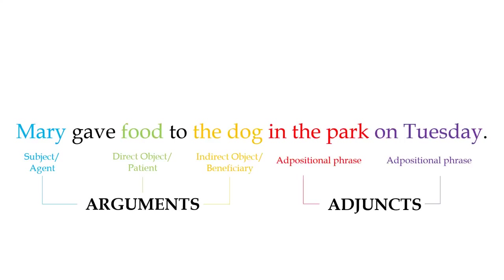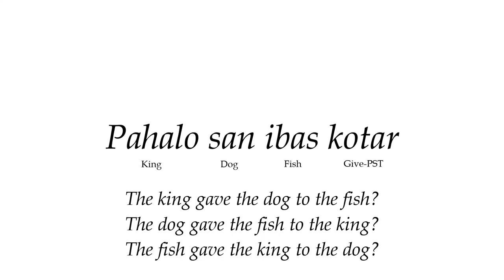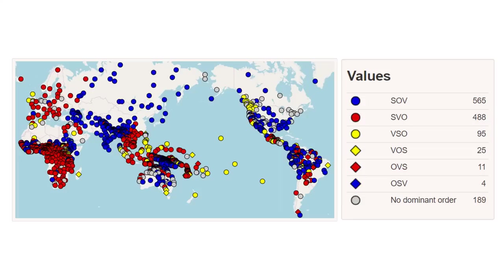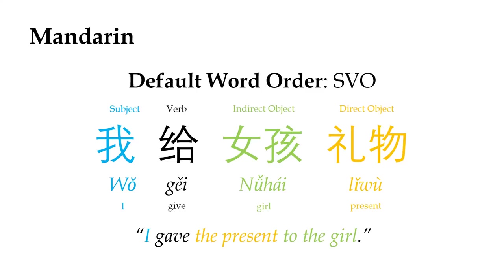It's critically important for a language to have a means of making clear what any given word's role is, otherwise phrases will be impossible or at least very difficult to interpret. Across all known natural languages, there are three main ways this role marking can be accomplished. The most common is to have a default word order, so the noun's roles can be gleaned from their position in the sentence. About 87% of languages sampled by the World Atlas of Language Structures have a default word order, though using word order alone is comparatively rare as a role marking strategy, as it's most often complemented with one of the other two mechanisms.